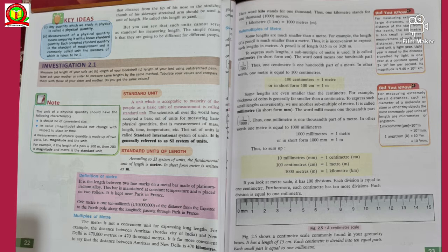Definition of meter, that is very important: It is the length between two fine marks on a metal bar made of platinum-iridium alloy. This bar is maintained at constant temperature and is placed on two rollers. It is kept near Paris in France. One meter is one ten millionth of the distance from the equator to the north pole along the longitude passing through Paris in France. So ten millionth is one upon ten millions.